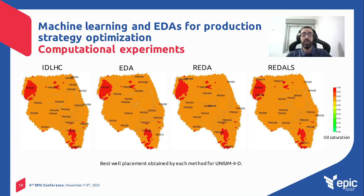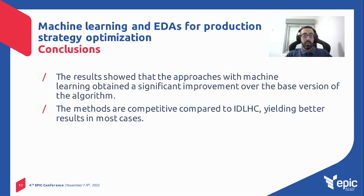Here we have a visual representation of the well placement with the highest NPV obtained by each method for UNISIM-2D. The color indicates oil saturation. In summary, the results show that the approaches with machine learning obtained a significant improvement over the base version of the algorithm, and the methods are also competitive compared to IDLHC, yielding better results in most cases.